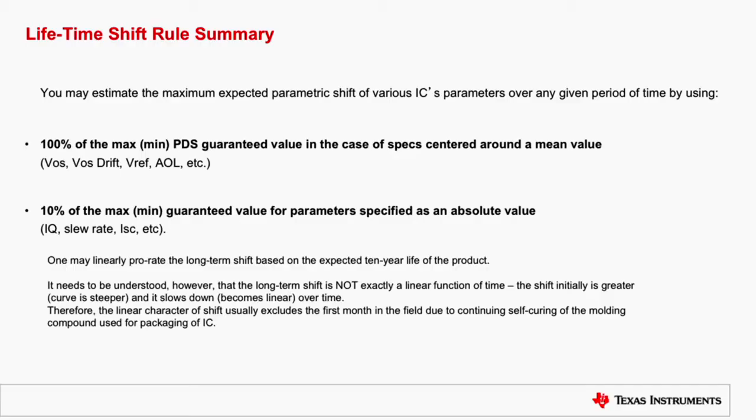In summary, there are two types of specs. And one may estimate the maximum expected parameter shift of various parameters over a given period by understanding how they change over the life of a product. There are the specs that change 100% of the maximum or minimum PDS guarantee value. And there are the specs that change only by 10% of its value. One may use this knowledge to prorate how various parameters can change over any given period of time.